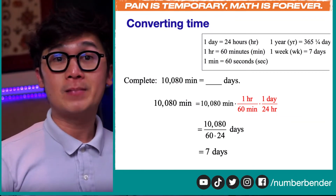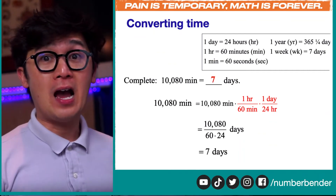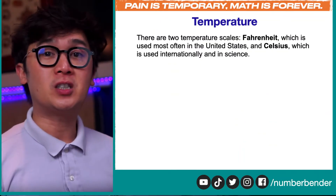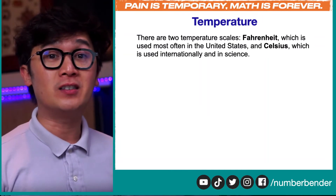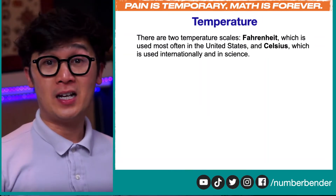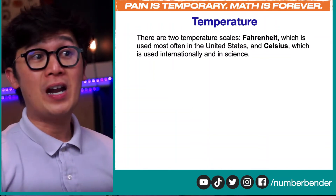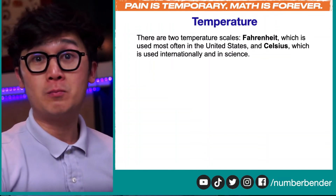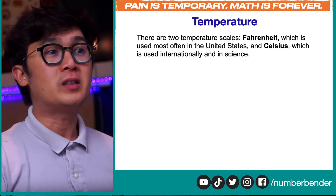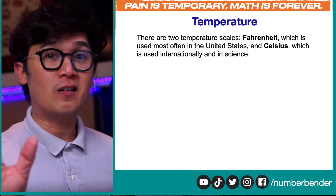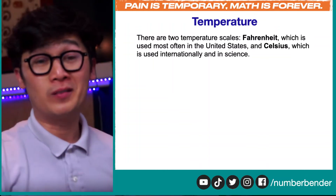This is how we convert units of time using the conversion factor. Now let's look at temperature and see how we convert between Fahrenheit and Celsius. There are two temperature scales: Fahrenheit, which is used most often here in the United States, and Celsius, which is used internationally — in the rest of the world and in science.